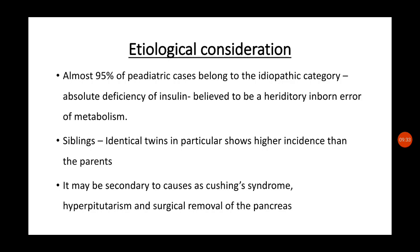Evidence suggests that identical twins show a higher incidence than parents, meaning if the parent has juvenile diabetes there is some chance, but both twins having it is more common. Juvenile diabetes may also be secondary to causes such as Cushing syndrome, hyperpituitarism, and surgical removal of the pancreas.